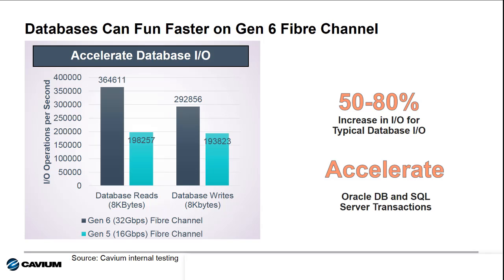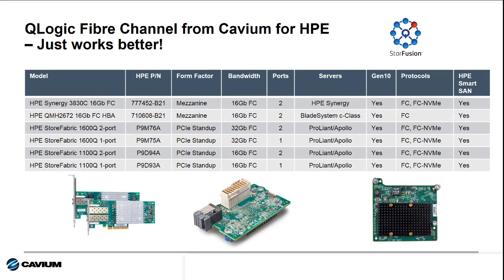So yes, infrastructure matters. The IOPs capability and the available bandwidth play a crucial role in the actual performance your customers will see when deploying new storage technologies like these flash arrays. The good news is that HPE has a full portfolio of Gen5 16GB fiber channel and Gen6 32GB fiber channel adapters based on QLogic technology from Cavium.